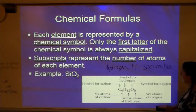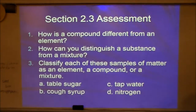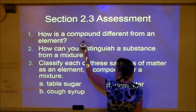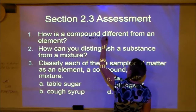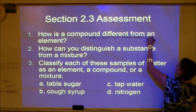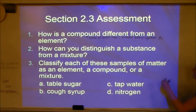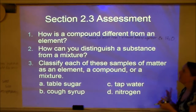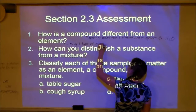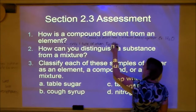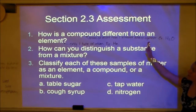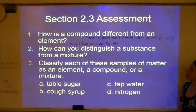Section assessment question one: how is a compound different from an element? A compound is made of more than one element bonded together — for example, water has hydrogen and oxygen bonded together. An element is only one type of atom — for example, helium (He) is just all helium atoms, nothing else. So compounds are made of more than one element, while elements are only one type of atom.